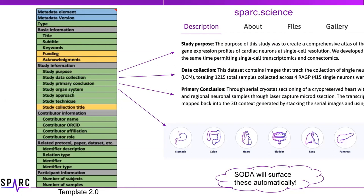So instead of having one blob for a description, we now have a study purpose, data collection, and primary conclusion — things you've already seen in your published datasets. These have just been broken out from the single description field into what we're now putting onto SPARC.Science. Things like study organ system were previously added by curators themselves, but if you'd like to fill that in, that information will now feed into facets on the portal. The technique field will hopefully get some nice facets on the portal as well.